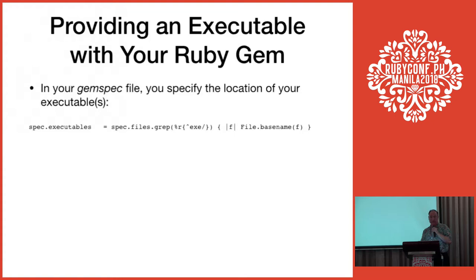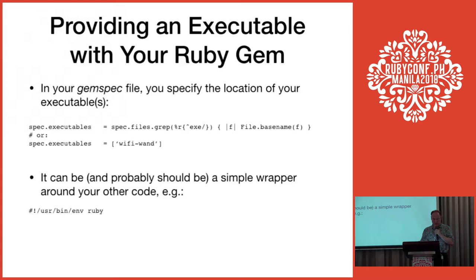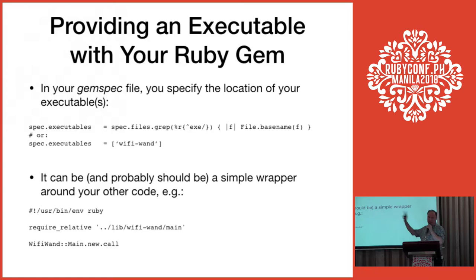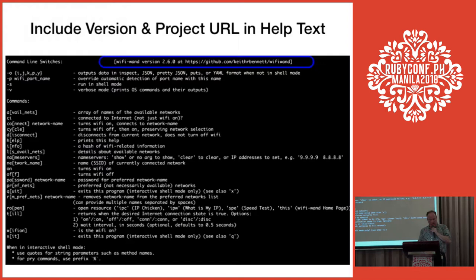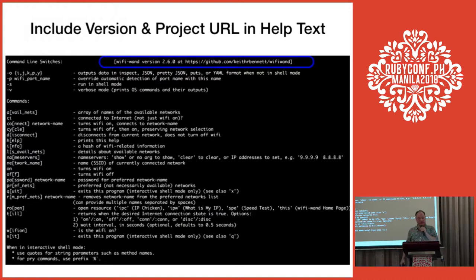You'll need to provide an executable with your gem. When you call bundle gem to create a skeleton, it provides a line that is a bit cryptic but works. The executable should be a very simple wrapper around your other code. In my executable, it's just creating an instance of Main and calling it — everything else is in the other code. It's good to include the version and project URL in your help text so that if they report a problem, they'll give you the version number and know where to go.